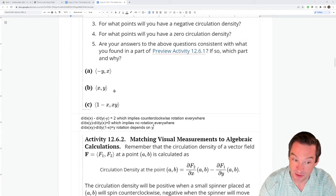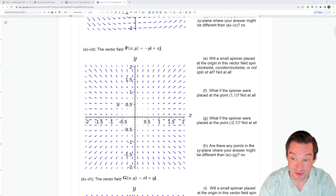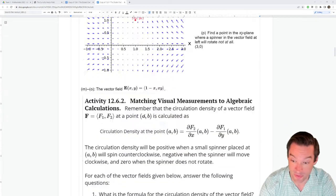The second example, the vector field x, y, the scalar curl was equal to zero, which implies that there's no rotation anywhere in the x, y plane. And that was this second example that we looked at in the preview activity.